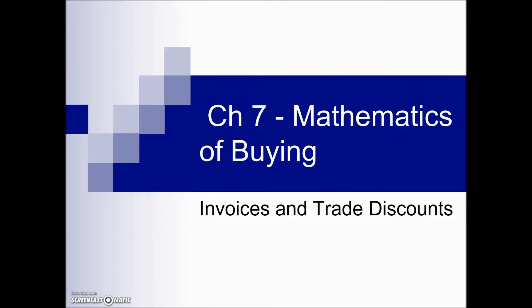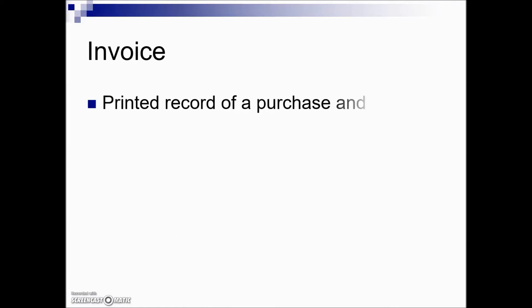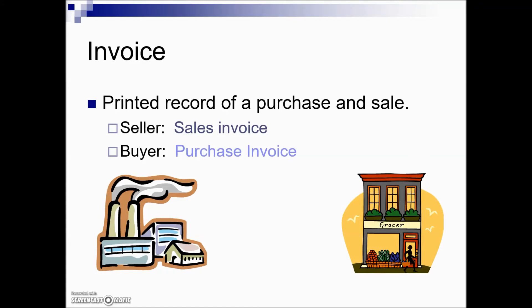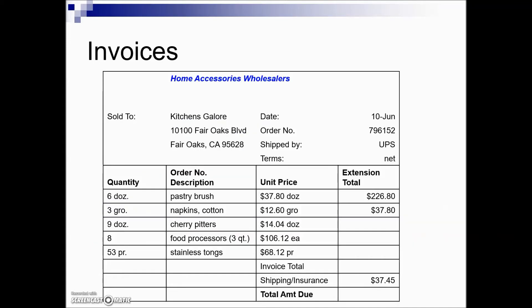In this section of math with business applications, we're going to take a look at invoices and trade discounts. An invoice is a printed record of a purchase and sale. The seller has an invoice as well as the purchaser, showing among other things the quantity ordered, the number shipped, the unit price, and the price by the unit.